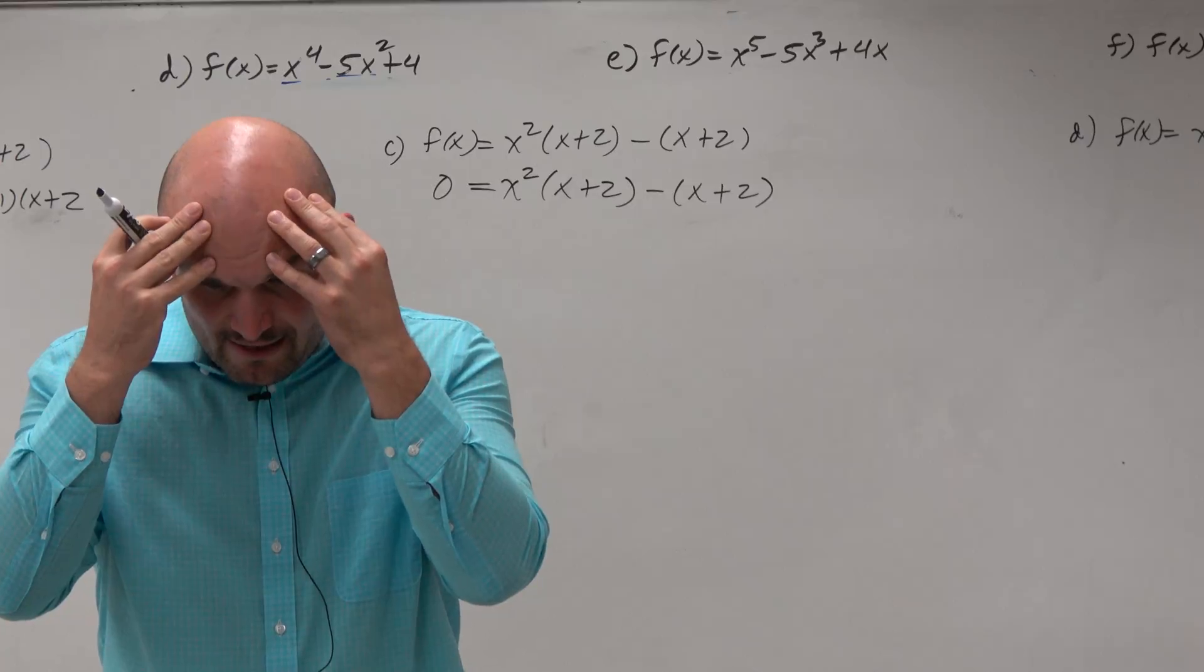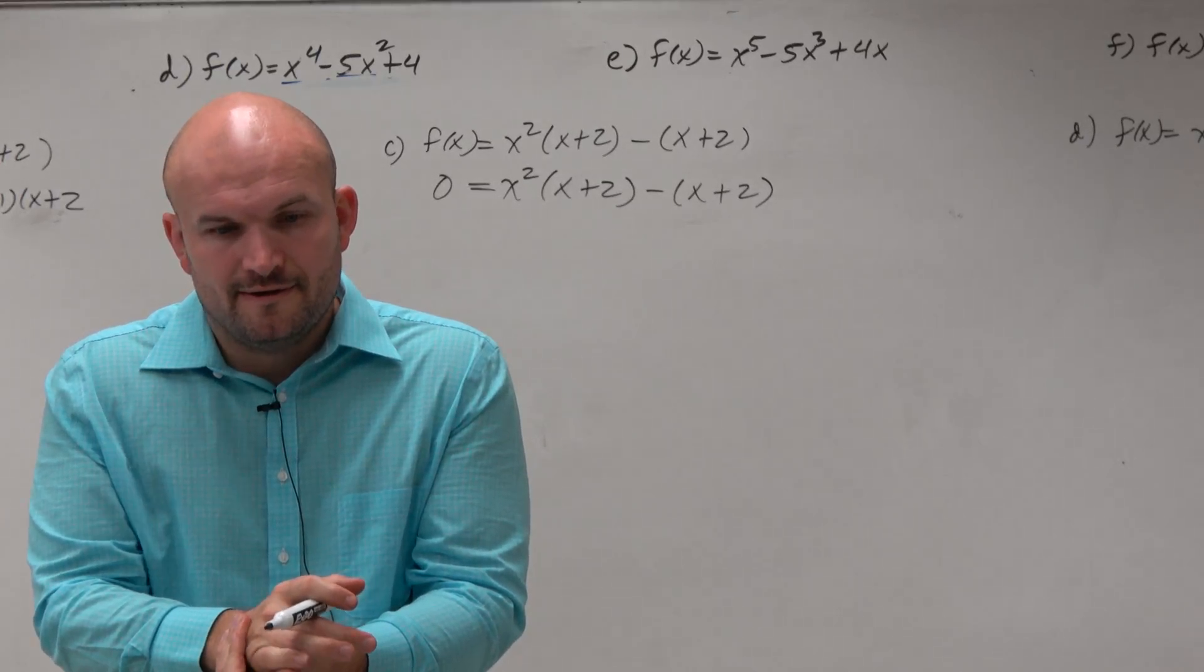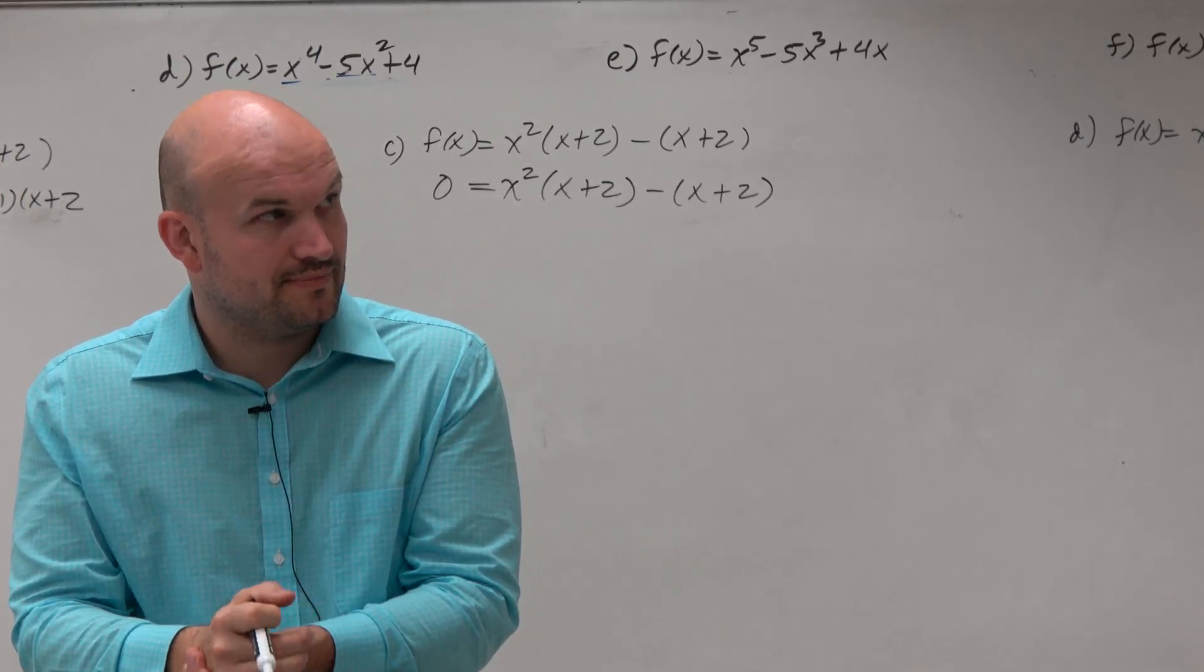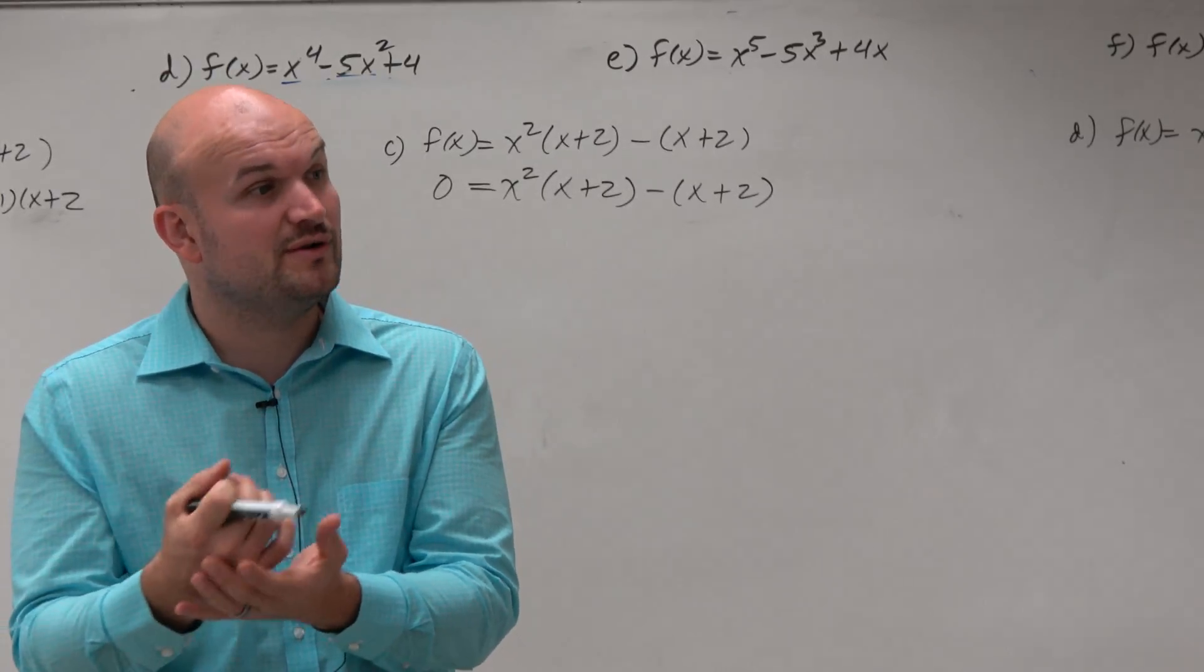And now we've got to think, all right, so a couple things. I've got to find the zeros and I've got to write the linear factorization. So linear factorization is rewriting something as a product.